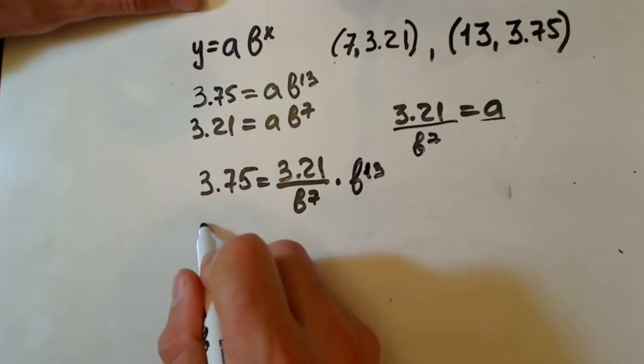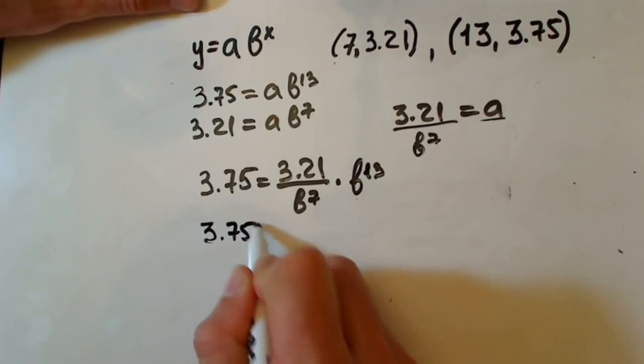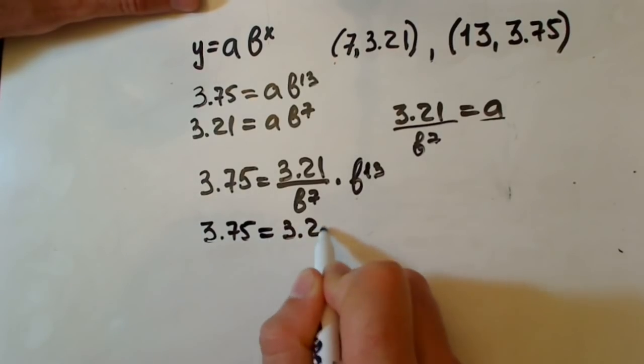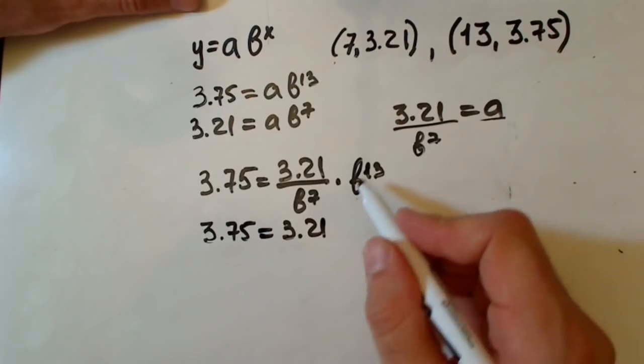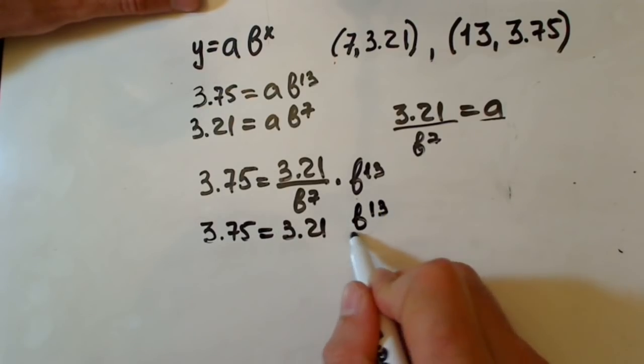Let's rewrite this a little bit. Let's write 3.75 equals 3.21. We have b to the thirteenth power over b to the seventh power.